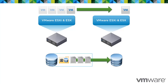When performing a cold migration of a virtual machine that has RDMs attached to it, the contents of the raw LUN mapped by the RDM are copied into a new VMDK file at the destination, effectively converting or cloning a raw LUN into a virtual disk.